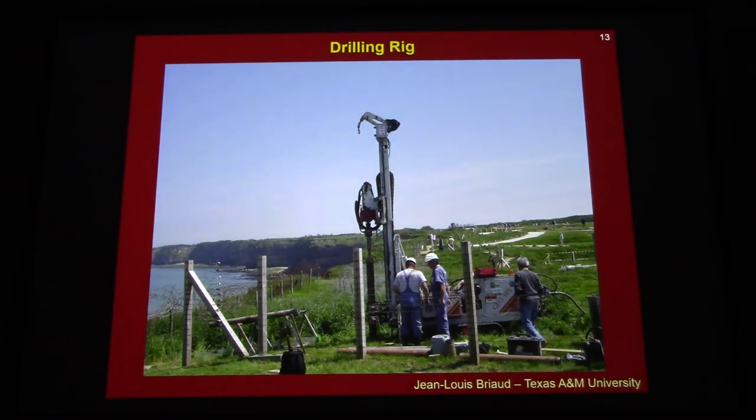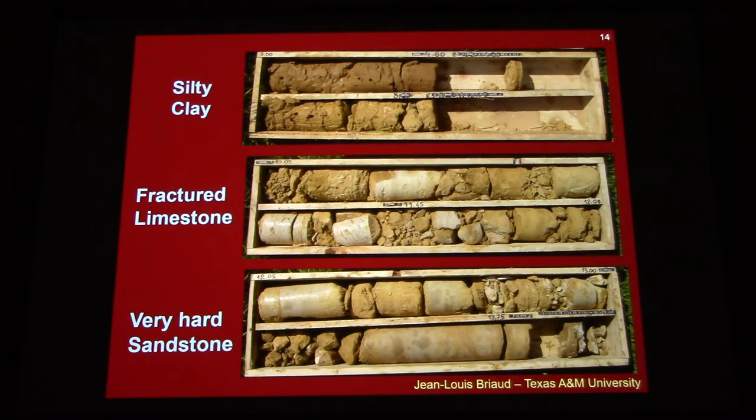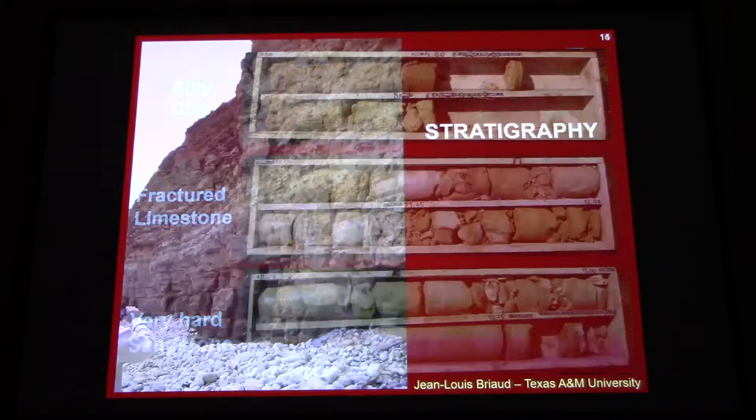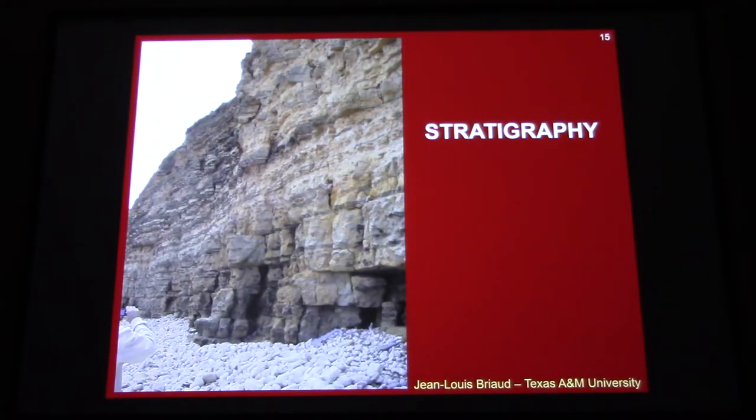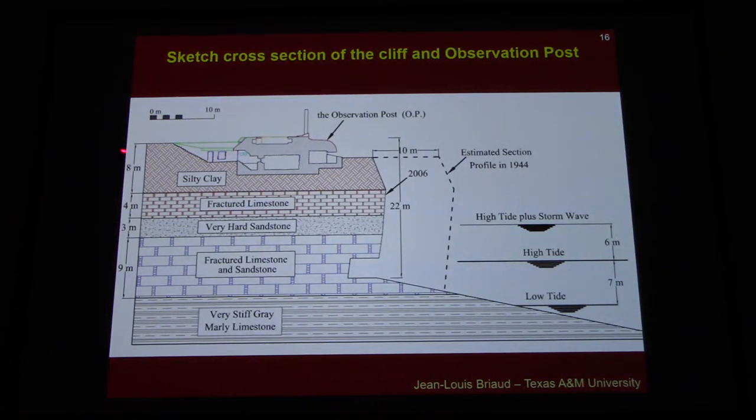So we went to the site, and we collected the rock samples that we brought back to Texas A&M University for testing. Here are the soil cores. Below the ground surface you have a silty clay for a certain distance. Then we have limestone, and then sandstone below that. What's amazing when you have a cliff in front of you is that you can really see the stratigraphy of the material. You can simply take a picture and identify each one of the rock layers or soil layers. You see the silty clay, here is the observation post, silty clay, limestone, sandstone, limestone and sandstone. And then a gray, marly limestone underlining the whole thing.